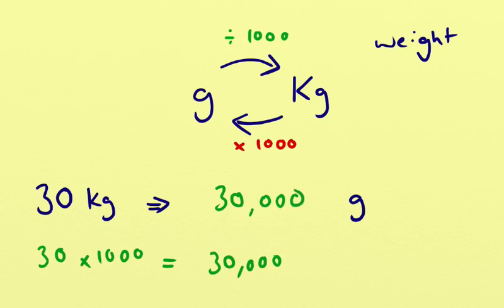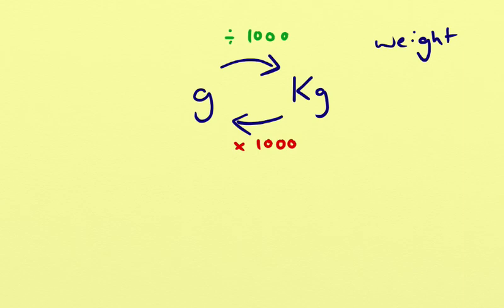Straight on to another example then. Let's say we have 450,000 grams. Let's make the numbers a little bit bigger. Methods are exactly the same. We've got 450,000 grams and we want to convert that into kilograms.